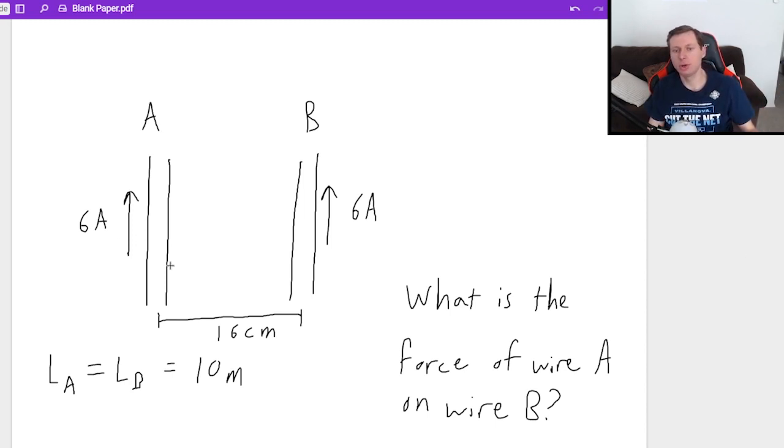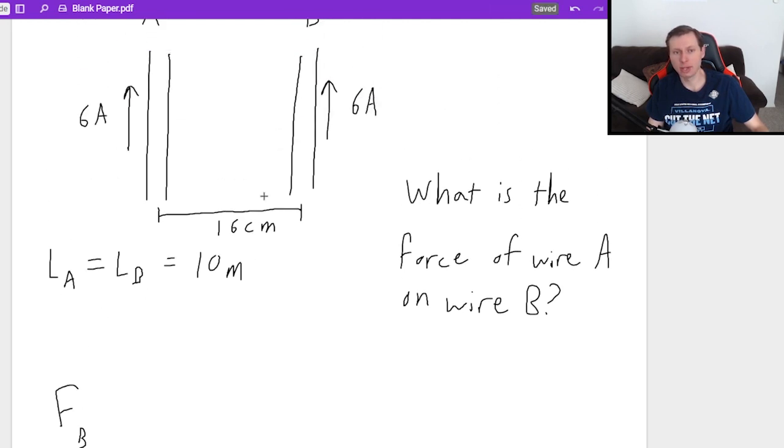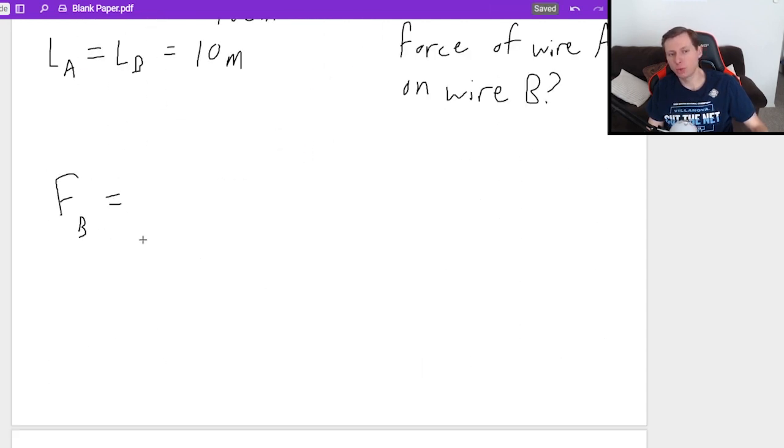So the first thing we want to do, if we want to find the force of wire A on wire B, we are looking at wire B here. That means when I set up my magnetic force equation, which I'll say FB for wire B, it's going to equal the magnetic force equation.